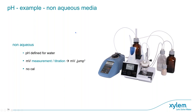pH is defined for water and not for any kind of solvent. However, you can measure relative values in solvents — for example in titration where you want to identify an endpoint rather than an exact pH value. In such cases, calibration does not make sense and is not needed or possible, because there is no water-based pH reference. You measure a relative, not an absolute, pH value.